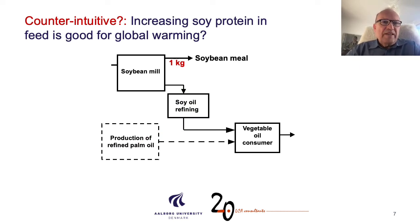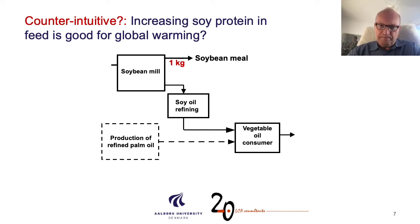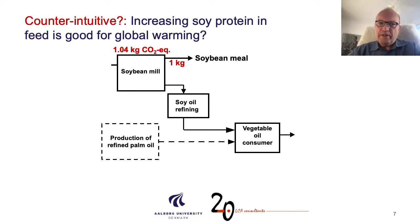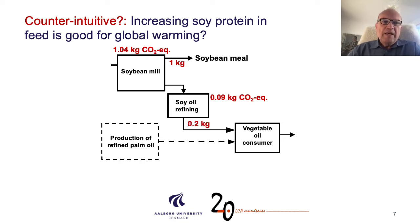Another intriguing thing is that increasing soy protein in feed should be good for global warming — sounds very counterintuitive. Let me try to explain how that can come about. If we ask for one kilogram of soybean meal, the CO2 equivalence of that production system is 1.04 kilograms of CO2. When we refine the soy oil, we should add 0.09, so we get 0.13 altogether. The soy oil is about 200 grams per kilogram of soybean meal.